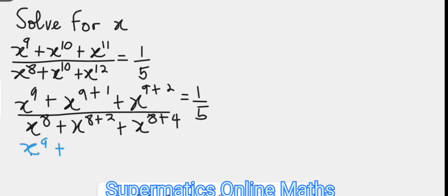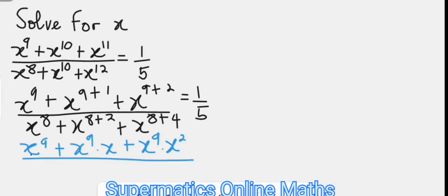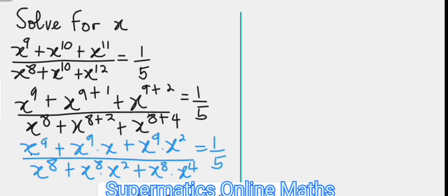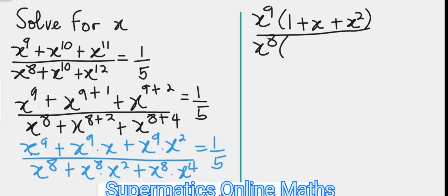This is further written as x to the ninth power, plus x raised to power nine times x (that's x raised to power nine plus one), plus x raised to power nine times x squared — over x raised to power eight, plus x raised to power eight times x squared, plus x raised to power eight times x to the fourth, equal to one over five. From the numerator we factor x to the power of nine, leaving 1 plus x plus x squared; from the denominator we factor x to the eighth power, leaving 1 plus x squared plus x to the fourth, equal to one over five.